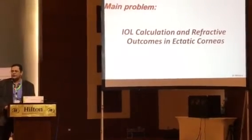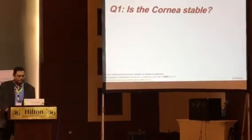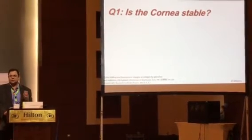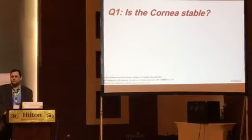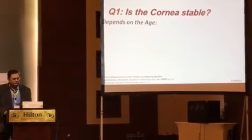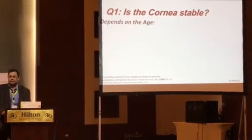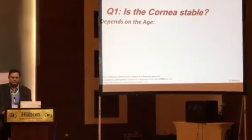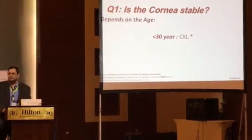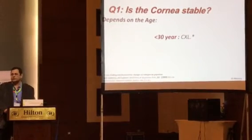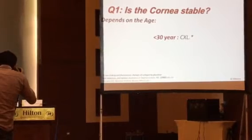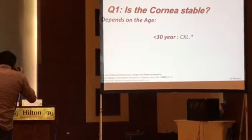The first question to be asked is: is this cornea stable or not stable? Stability depends on the age. If the patient is less than 30 years of age and the cornea is unstable, we have to cross-link this cornea. This is a fact.